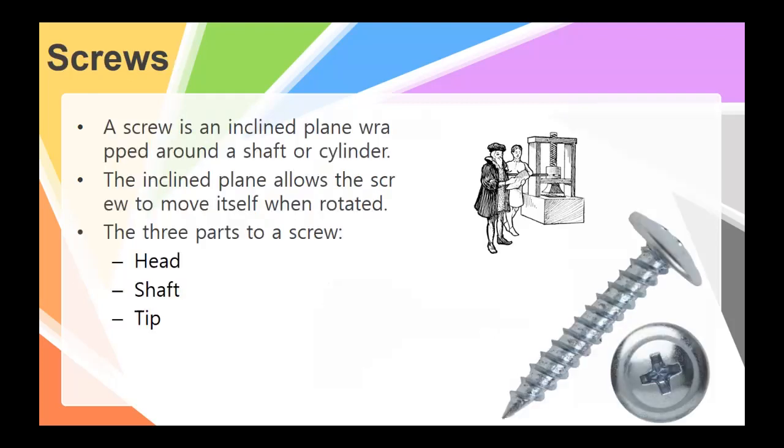And similarly, another one that's kind of in this category is the screw. Now a screw is going to have an inclined plane that is wrapped around a central cylinder so that we can turn rotational force into vertical force.